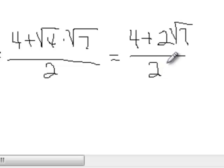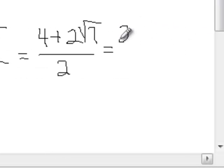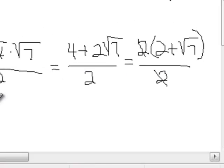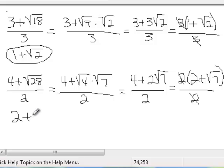And we do have a common factor of 2, so I'm going to factor that out. I'm going to get a 2 times 2 plus square root of 7 all over 2. So my 2's cancel, and I end up with 2 plus square root of 7 as an answer.